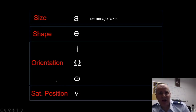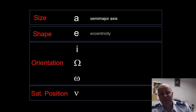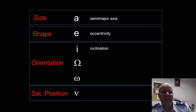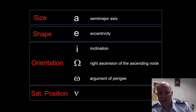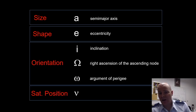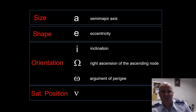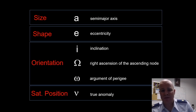Our size will be described by our semi-major axis. Our shape will be given by E, or eccentricity. Our orientation will be given by three separate angles: our inclination, our right ascension of the ascending node, or capital omega, and our argument of perigee, or little omega, which will define our swivel. And lastly, we have our spacecraft's position within the orbit, which is given by nu, or true anomaly.